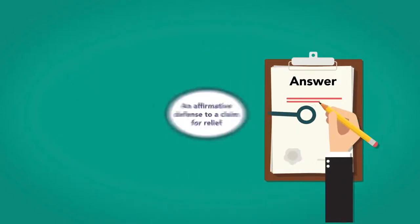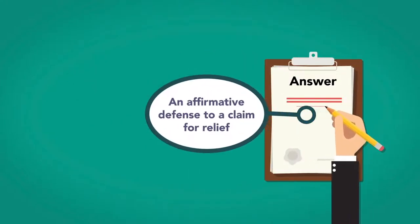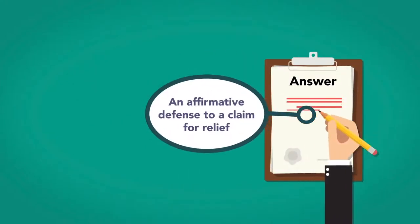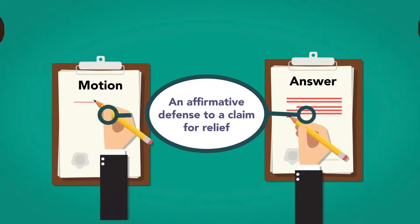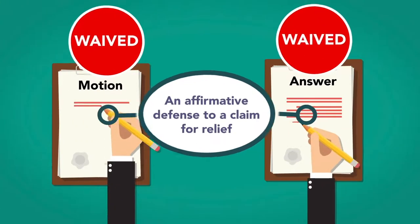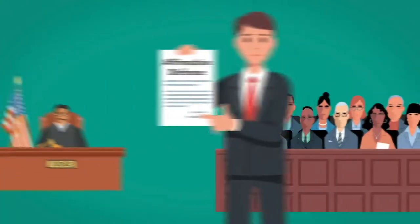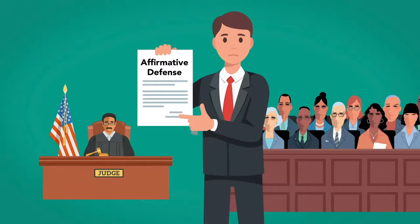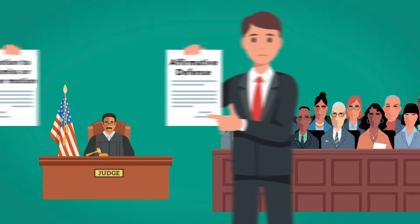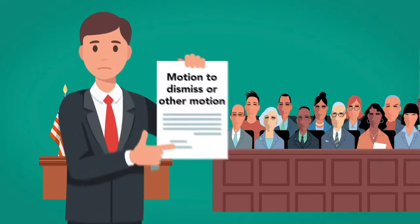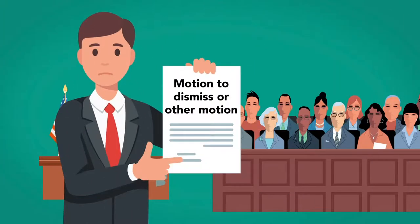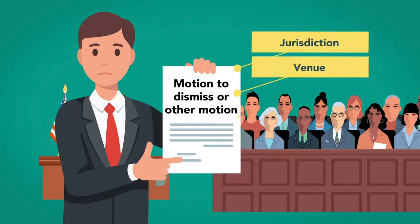Generally, an affirmative defense to a claim for relief must be asserted in the answer or in a motion, or it will be waived. Affirmative defenses are often accompanied by a motion to dismiss or other motion, particularly in questions involving jurisdiction, venue, and service of process.